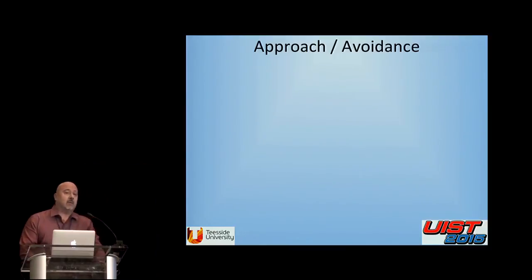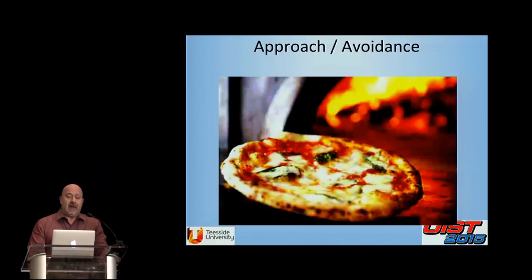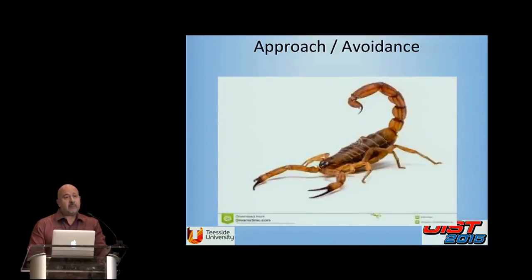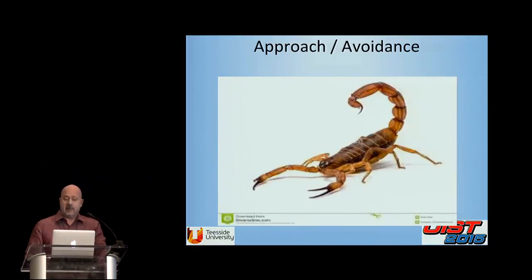Approach is defined as responding to an appetitive stimulus — something you're attracted to. And there are stimuli you would find repulsive, eliciting avoidance. But the prefrontal cortex controls us, and we also control the prefrontal cortex — it's an area of executive control. So approach and avoidance can be overruled. You can approach something you don't like and avoid something you like. If I'm on a diet, I'm going to withdraw from the pizza even though it normally elicits approach.